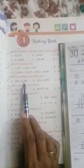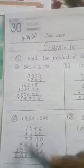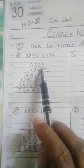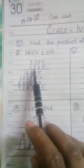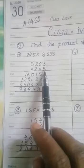How will you solve? I will show you very easily. Firstly, you write down 3203 multiply by 245. How do you multiply? You know the tables.